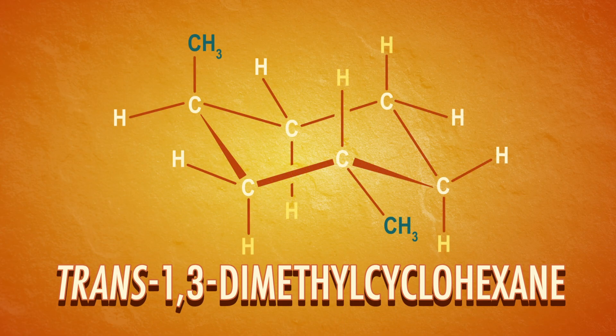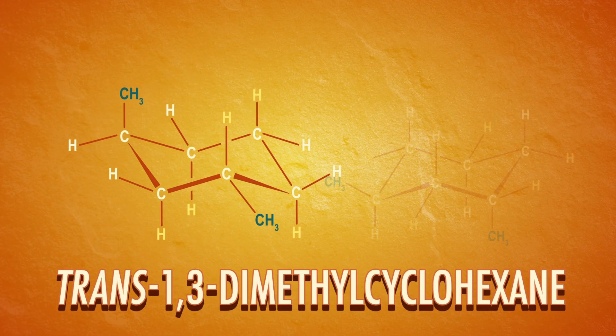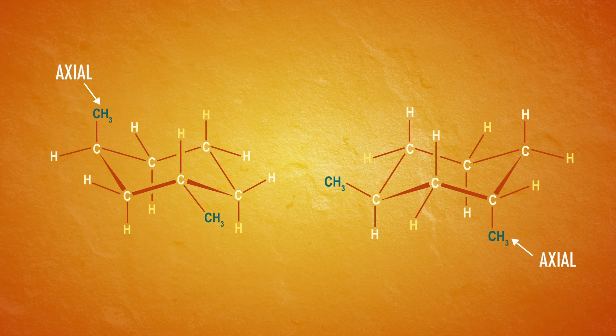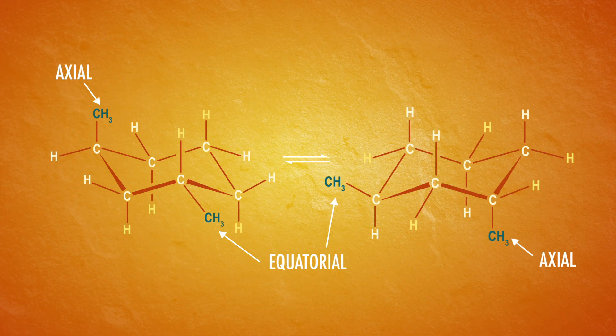But now let's consider trans-1,3-dimethylcyclohexane. In both chair conformations, there's one axial methyl group and one equatorial methyl group. So chair flips happen, but neither structure is energetically preferred over the other. There's an axial methyl group in each one. As the groups on the chair get even bigger and chunkier, the chair conformation where the substituent is in the equatorial position becomes even more favored by the molecules in a sample.